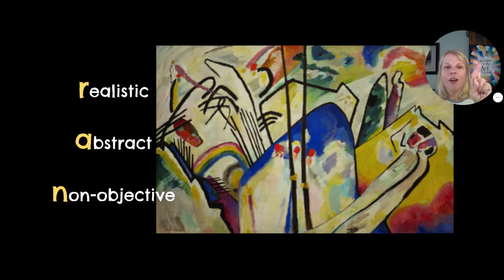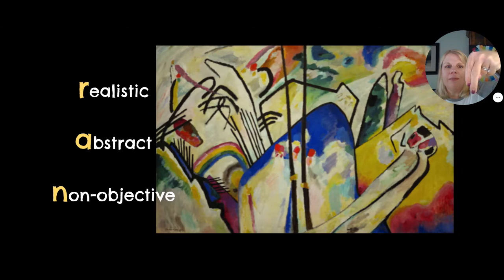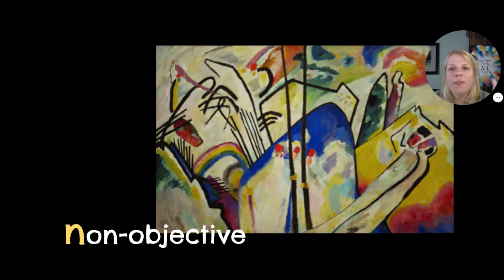Okay, second. R, A, or N? Realistic, abstract, or non-objective? Yep, this is non-objective. It's not a picture of something. I love this artist and I love this painting, but you can't say, 'Oh, that's a nice house,' because it's not.